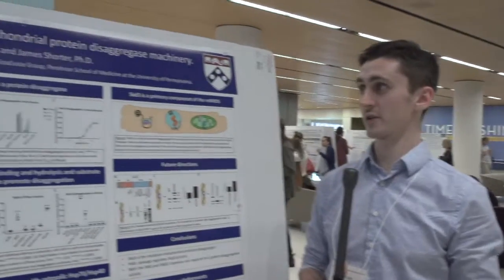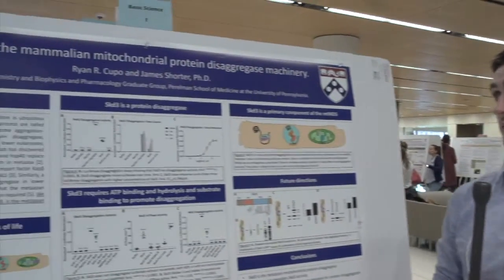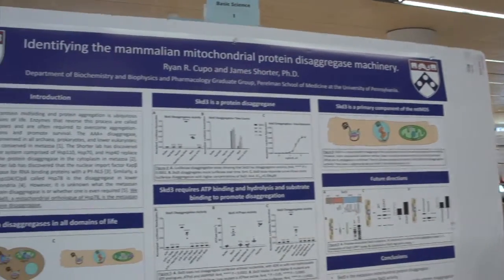Hi, my name is Ryan Cupo, and I'm a fourth year graduate student in the lab of Jim Shorter. The title of my project is Identifying the Mammalian Mitochondrial Protein Disaggregase Machinery.